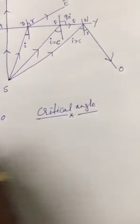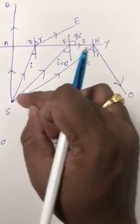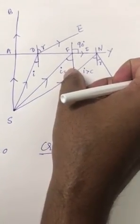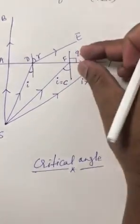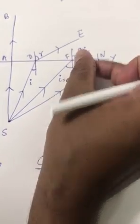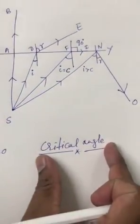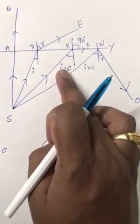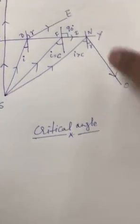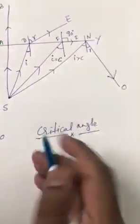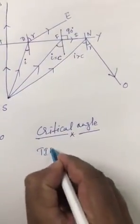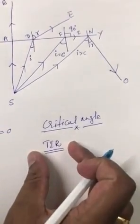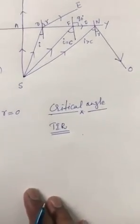Important: what is the critical angle? When the light ray travels from denser media to rarer media, at a certain angle of incidence, the refracted light ray will make 90 degrees with the normal — then that angle of incidence is called the critical angle. If you further increase the angle of incidence, the light will come back or bounce back to the same medium. This is called total internal reflection.